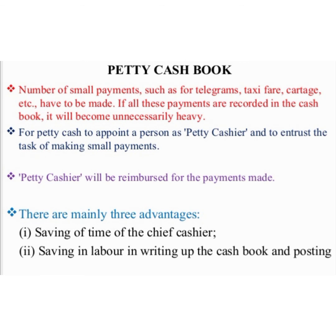The last type of cash book is the petty cash book, which is prepared to record only petty expenses. A number of small payments — such as for telegrams, taxi fare, etc. — have to be made regularly. If all these payments are recorded in the main cash book, it will become unnecessarily heavy. A person is appointed as petty cashier and entrusted with the task of making small payments. The petty cashier is reimbursed for the payments made. These are the important types of cash book.